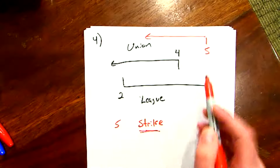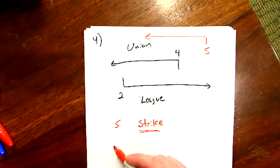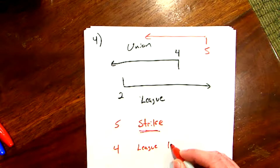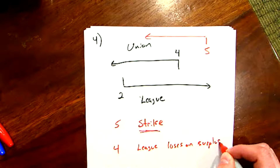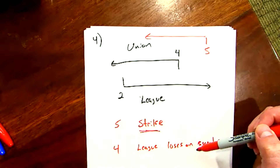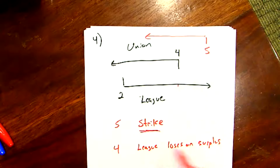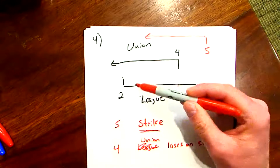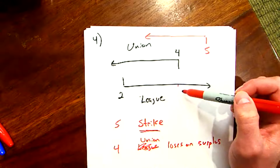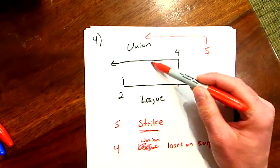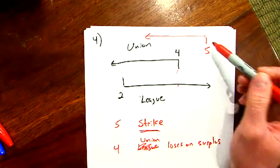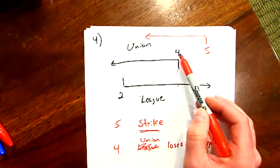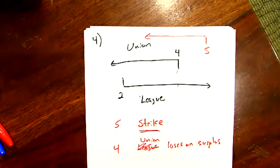Even if the league's optimism doesn't lead them to offer five — maybe they offer four — the union would still accept that. But the league's optimistic beliefs open up the possibility of offering higher numbers of games than they otherwise would. The union loses out on surplus, while the league is better off. But if they're too optimistic and offer five — past the threat point — the union could strike.